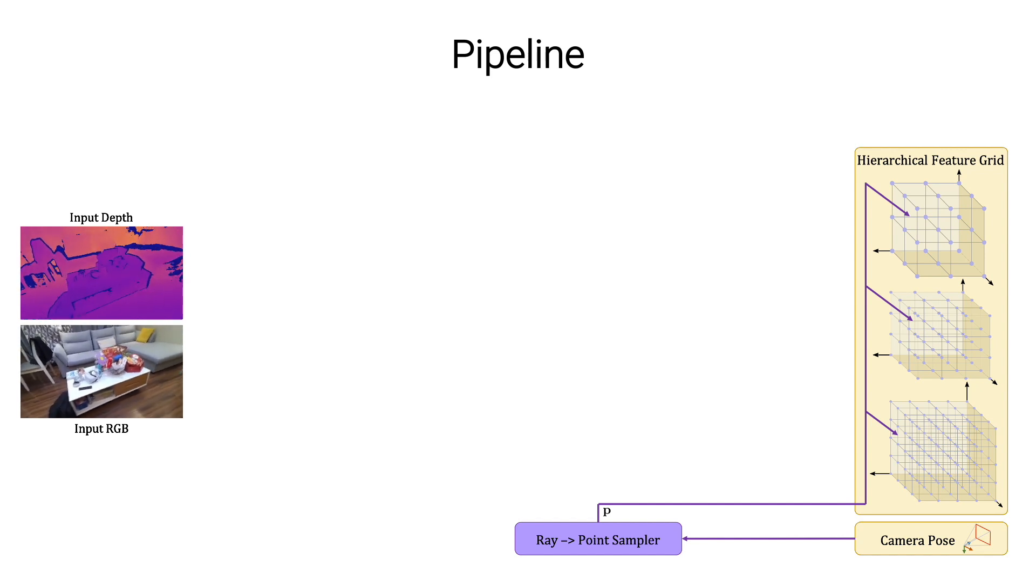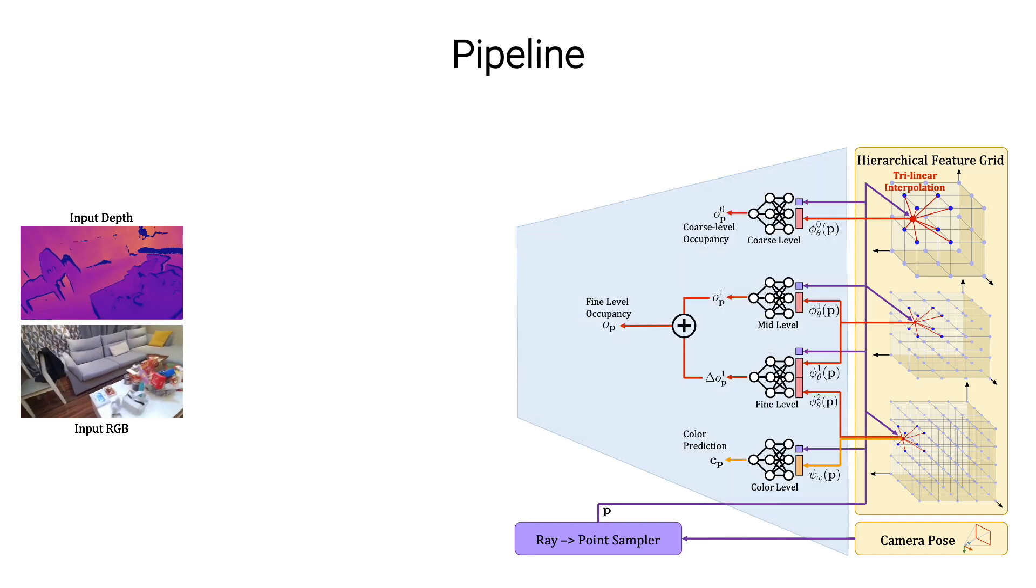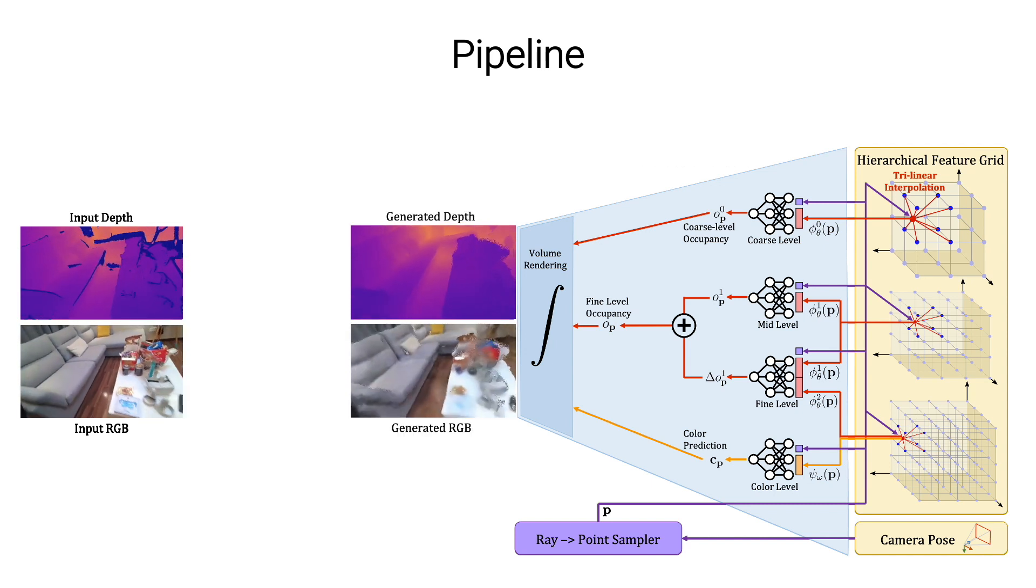And next, along each ray, we sample 3D points near to the surface and then extract features for each of the points using trilinear interpolation. With tiny MLPs, we predict the occupancy and the color values at different scales for each 3D point on the ray. Eventually, we aggregate along the ray using the NeRF-like volume rendering equation to produce an estimated depth and a color image.